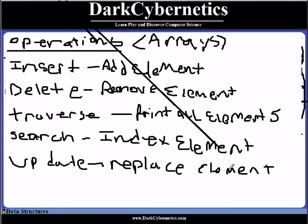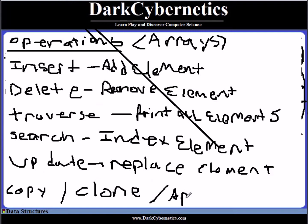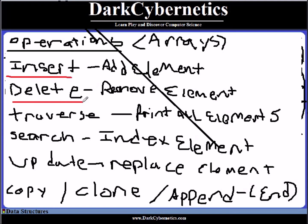We can also copy, clone, or append items in an array. Appending, or concatenation, means putting items at the end of the list. So our full set of operations for arrays includes: insert, delete, traverse, search, update, copy, clone, and append — with appending placing items at the end.